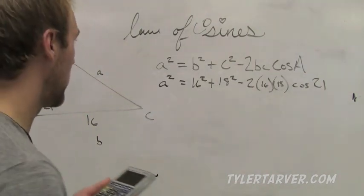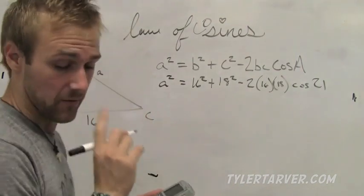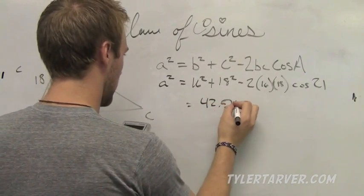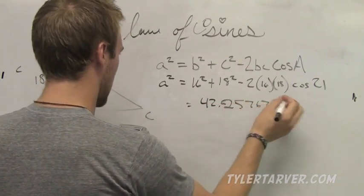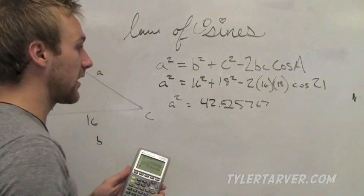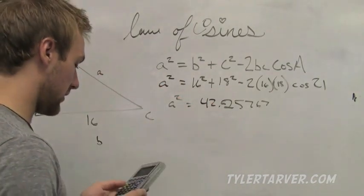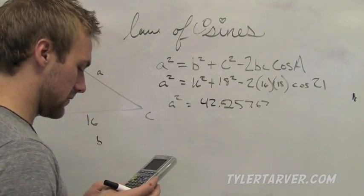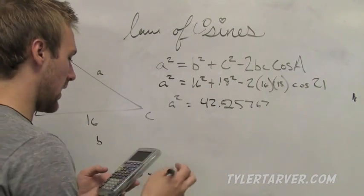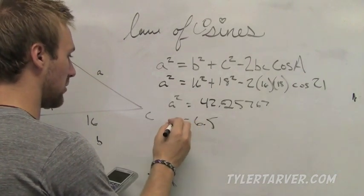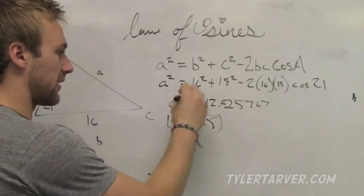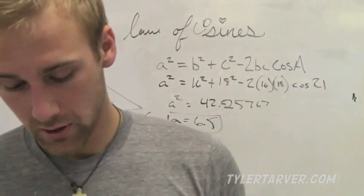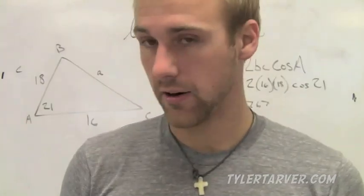I got 42.25767. I'm going to leave my calculator because I need the square root: square root of 42.25767. I got 6.5 — whatever they want to round it to, but that's what it is. Remember, you have to use the square root to get rid of the squared. And you're done. That was super duper fun and I don't ever want to talk about it again.